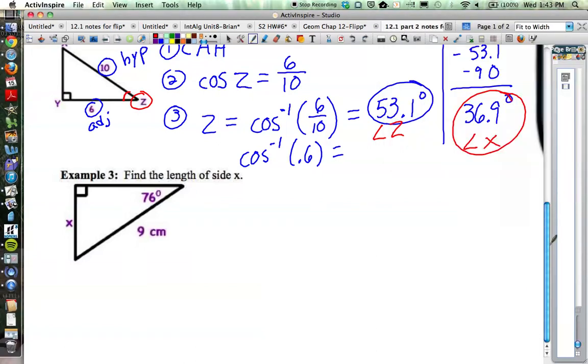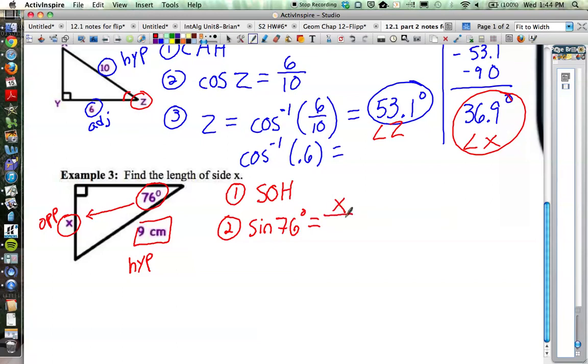Example three, find the length of side X. There's our angle that we're using, and then we have to think about what are the 9 and the X related to that angle. Well, the 9 is the hypotenuse. Side X is directly across from the angle, so that means that's the opposite side. The adjacent side would be the one on top, but we're not going to use that because we have the other two sides that we are focused on. So opposite and hypotenuse. What ratio are we using? That's right, we're using sine.